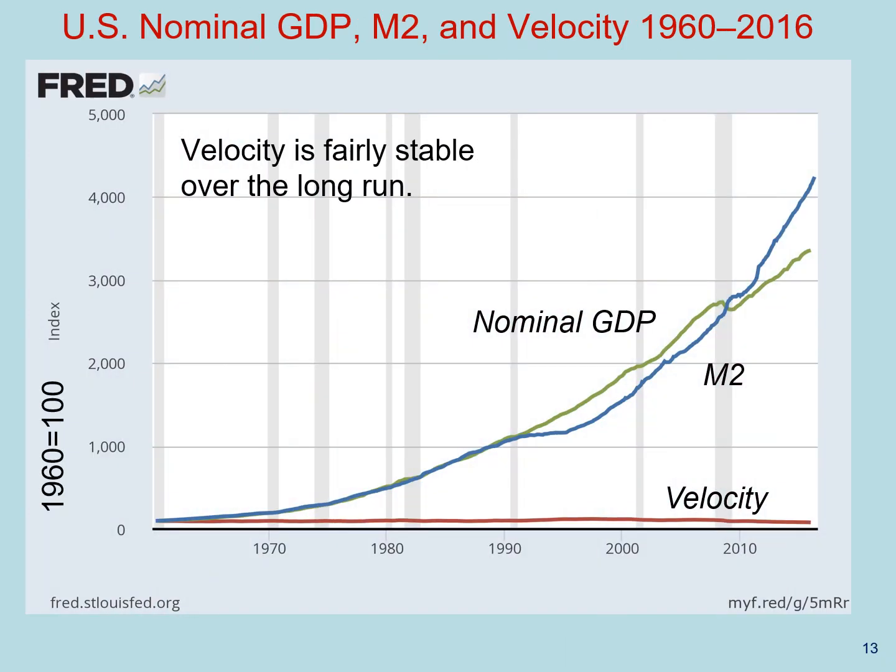Now let's go more deeply into the concept of velocity. Surprisingly, the data shows that velocity is roughly constant. In this graph, you can see that M2 and nominal GDP grow closely together — it's not a one-to-one relationship, but it illustrates the fact that velocity is roughly constant across time. So throughout the rest of the video, let's assume that velocity is constant.